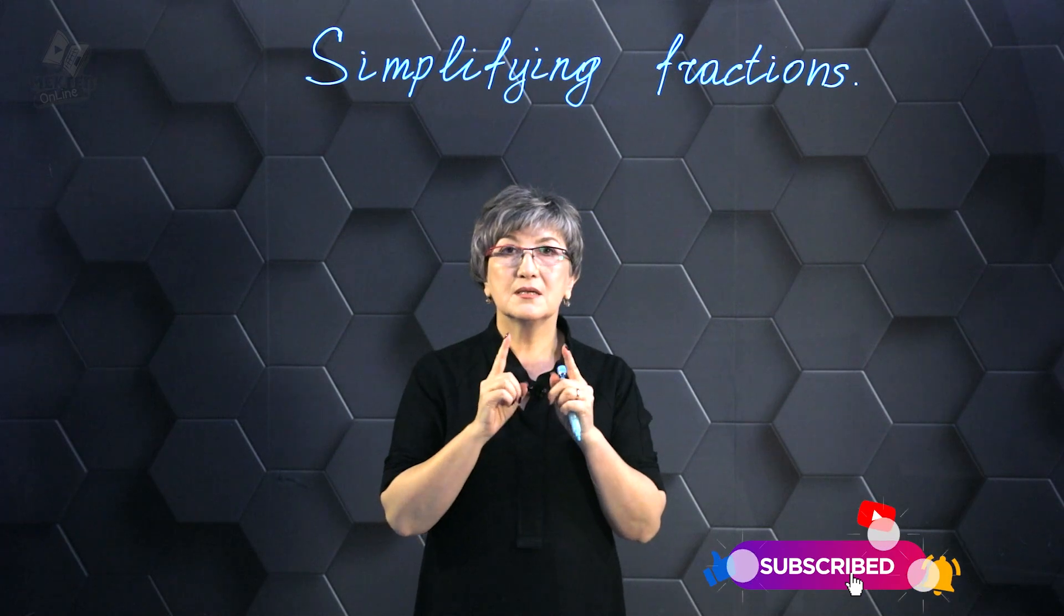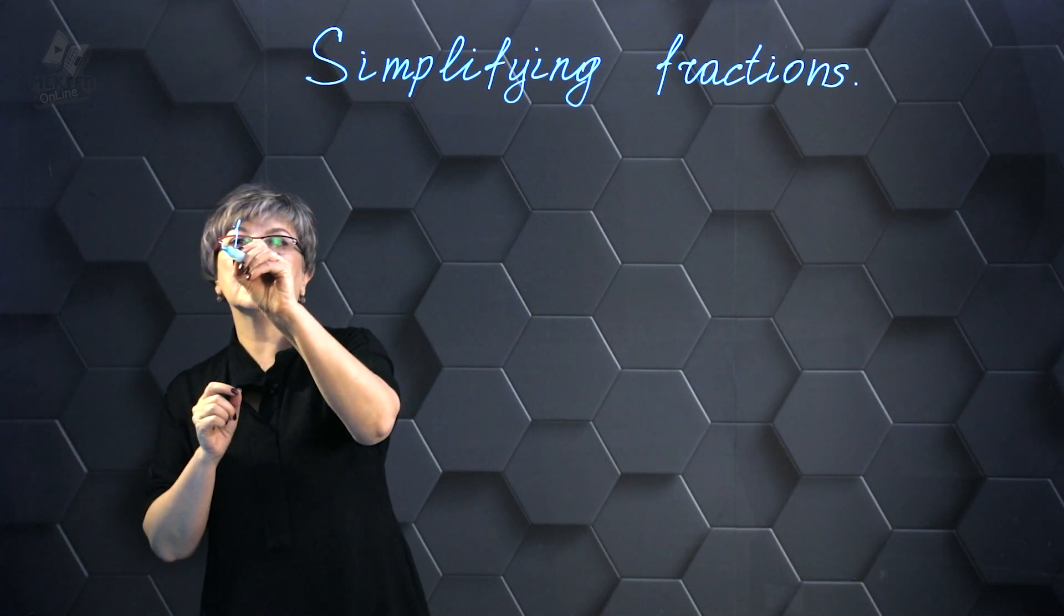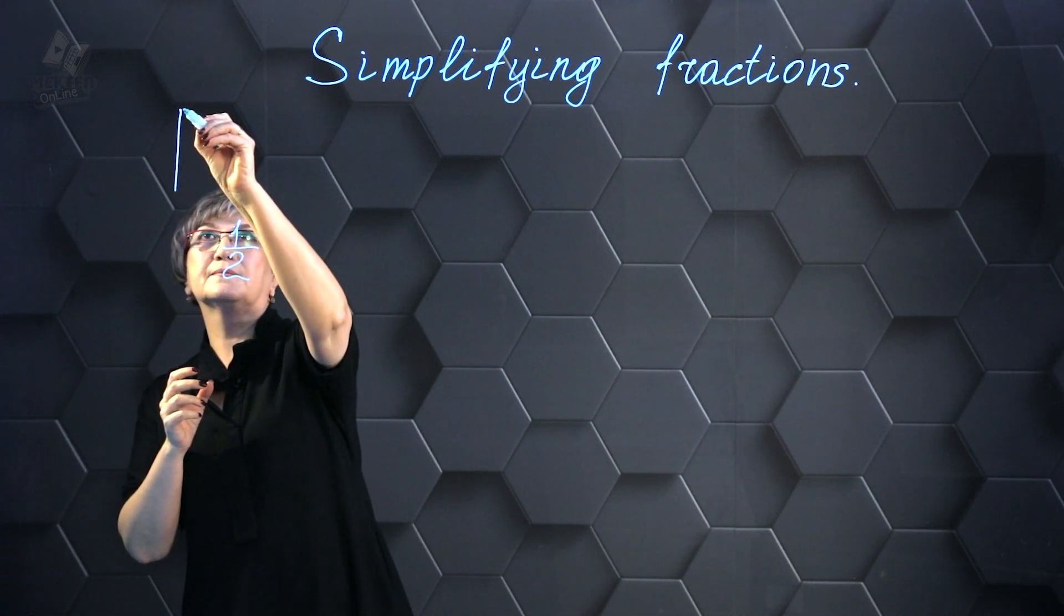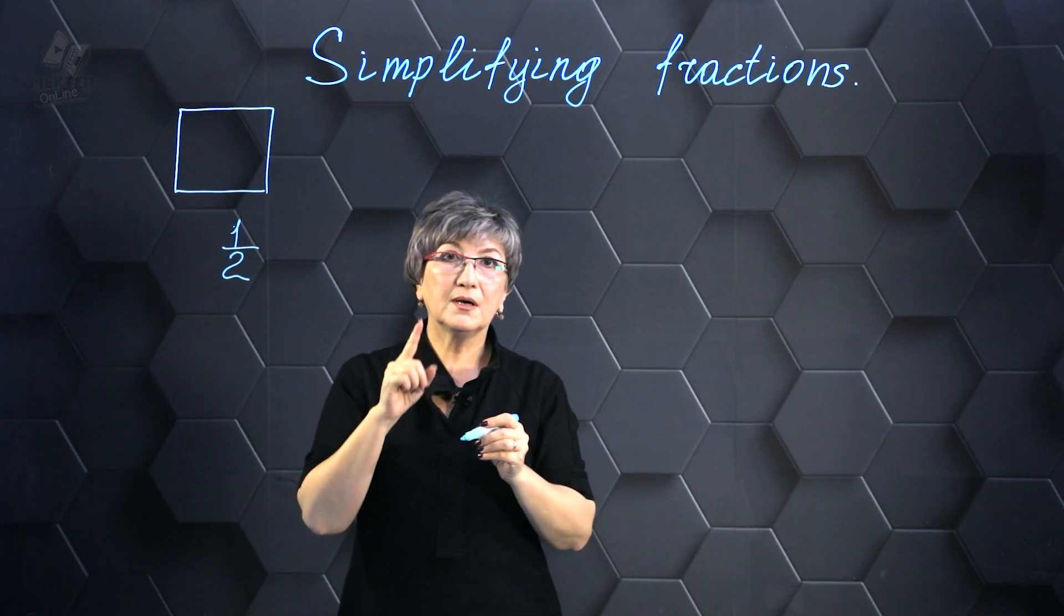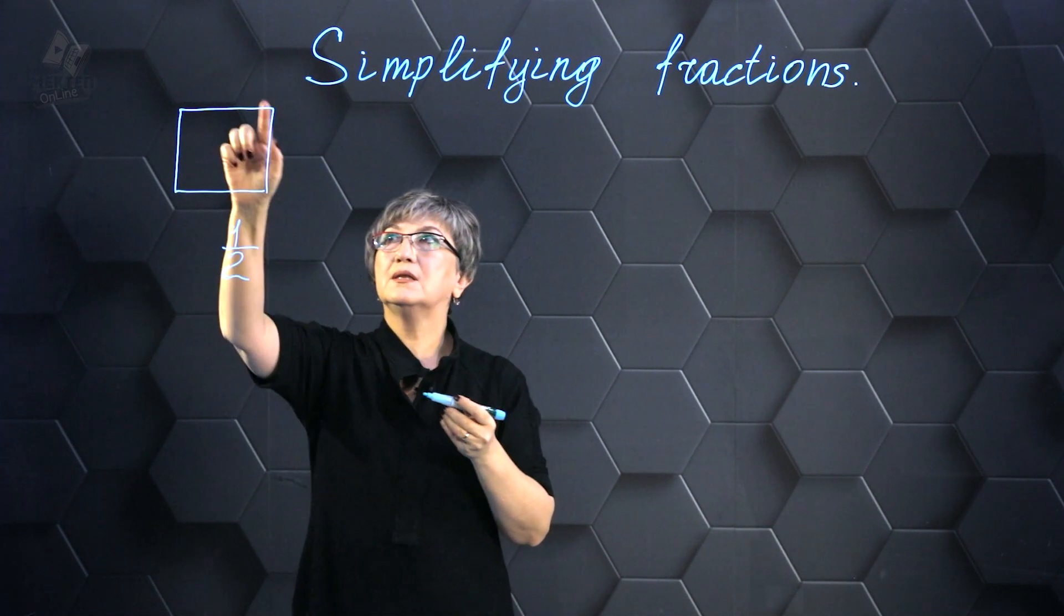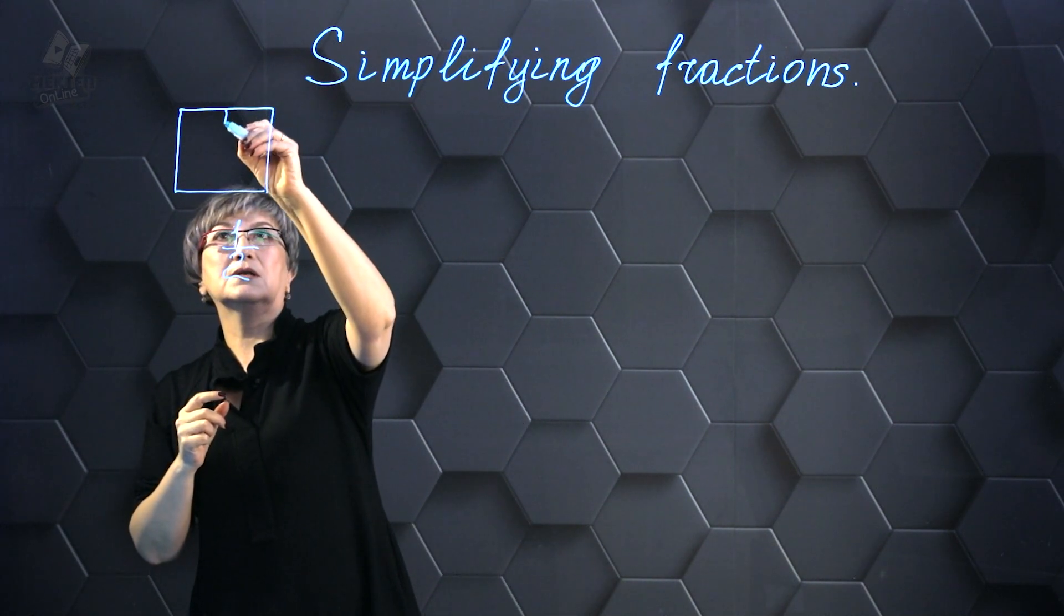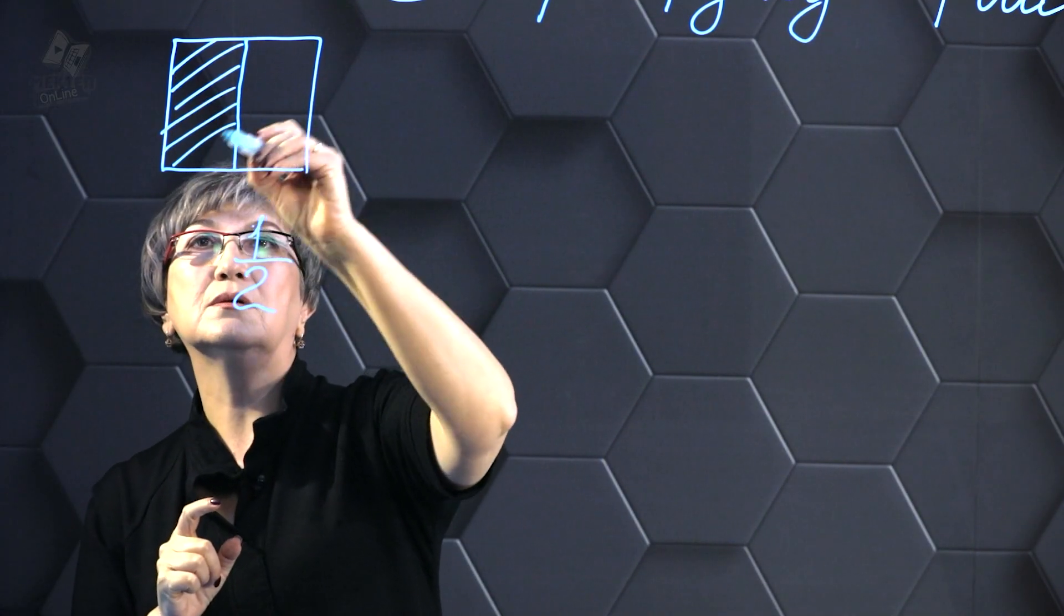Let's begin by representing the fraction 1/2. What steps should I take? I need to show the fraction 1/2. Let's take a square for demonstration and represent the fraction 1/2 here. What should we do? Since I only have two parts, I will divide this square into two parts. And I should take one part. Consequently, I will color one part out of the two parts.